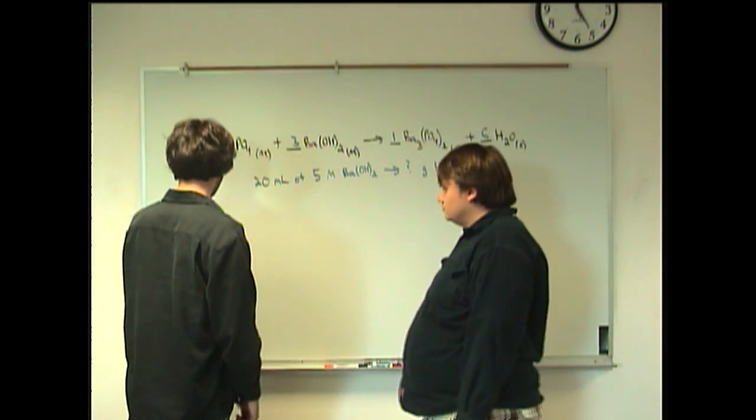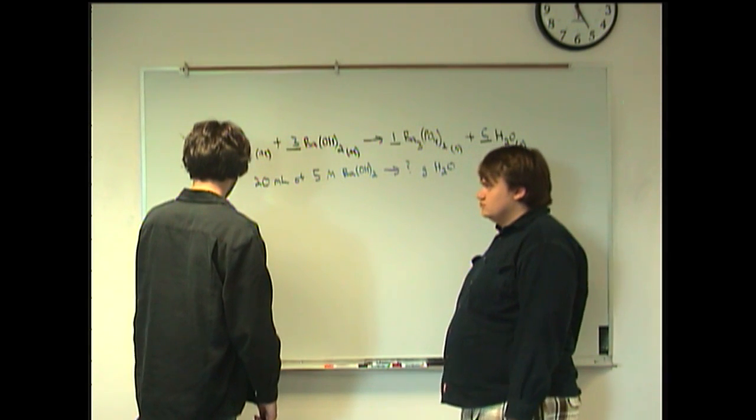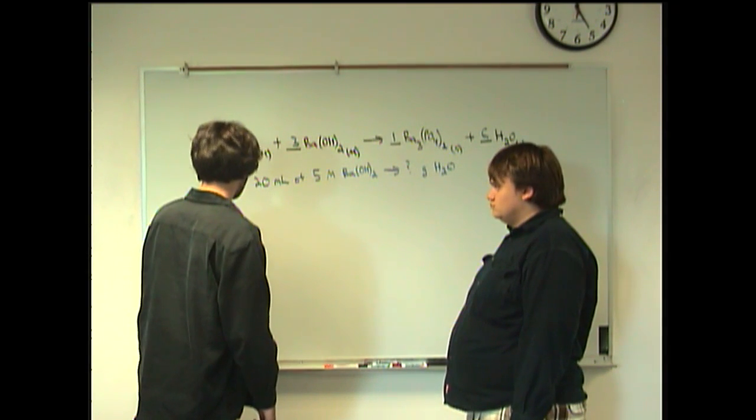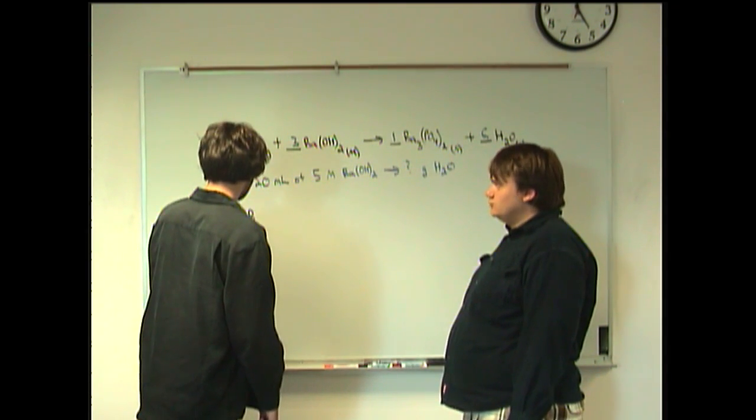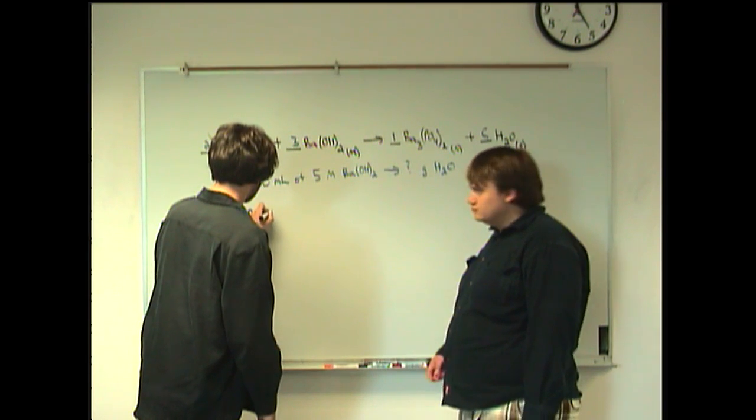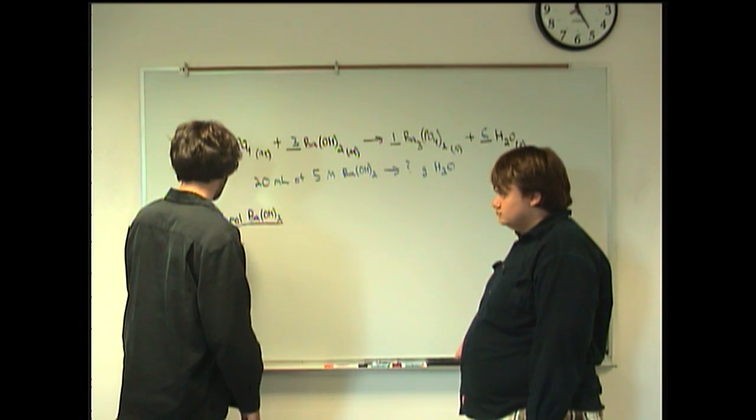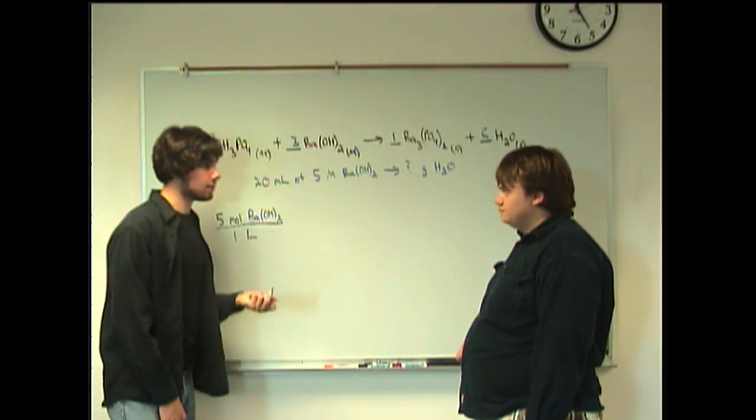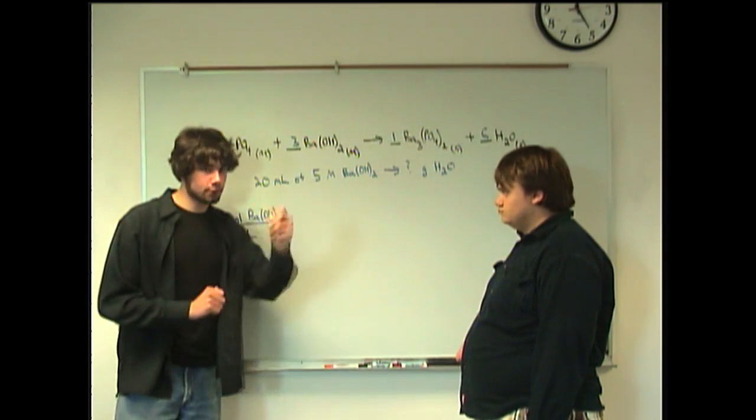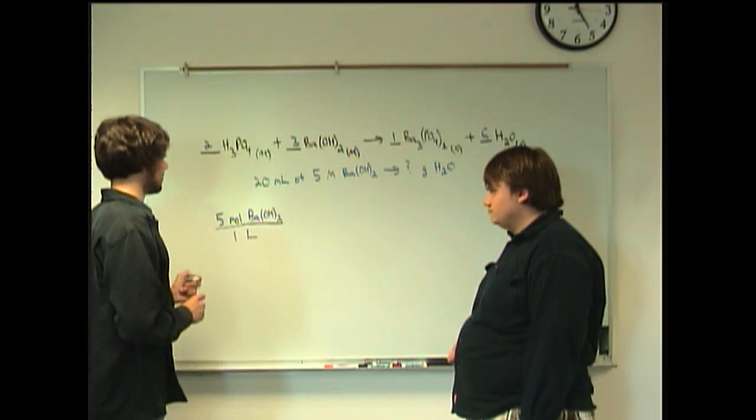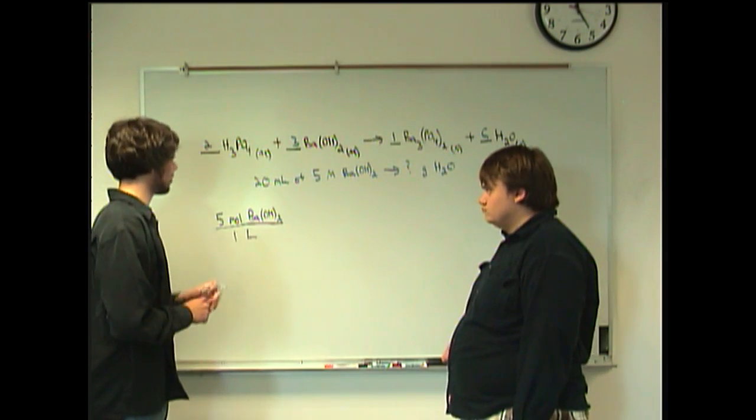Right. Exactly. So we can start by saying we have 5 moles of barium hydroxide. Okay. And we can say that's going to be over 1 liter. Alright. Okay? Because that's what molarity is. It's always over 1 liter. Don't forget that. Okay. Okay. So now we're here. What can we do?